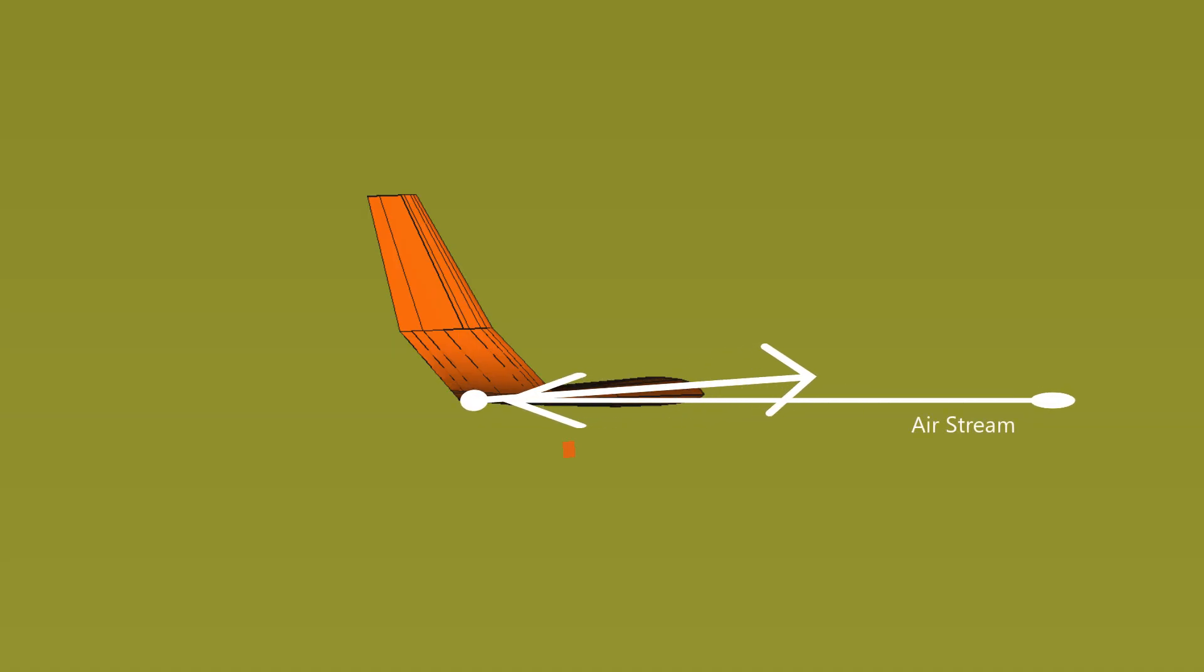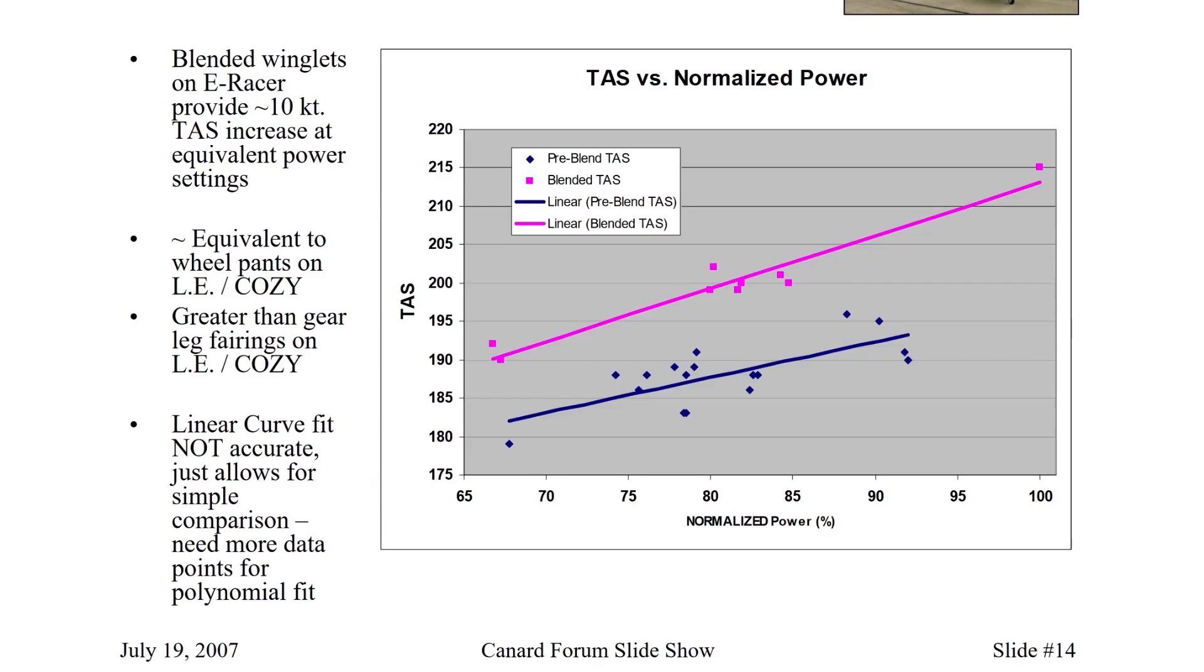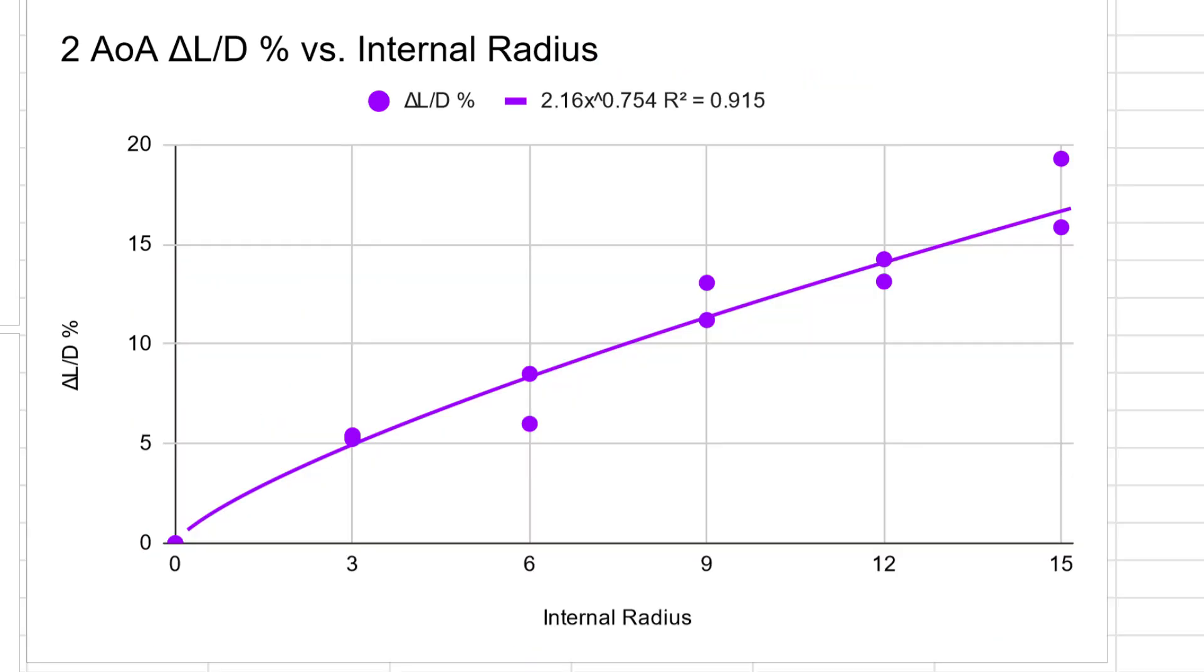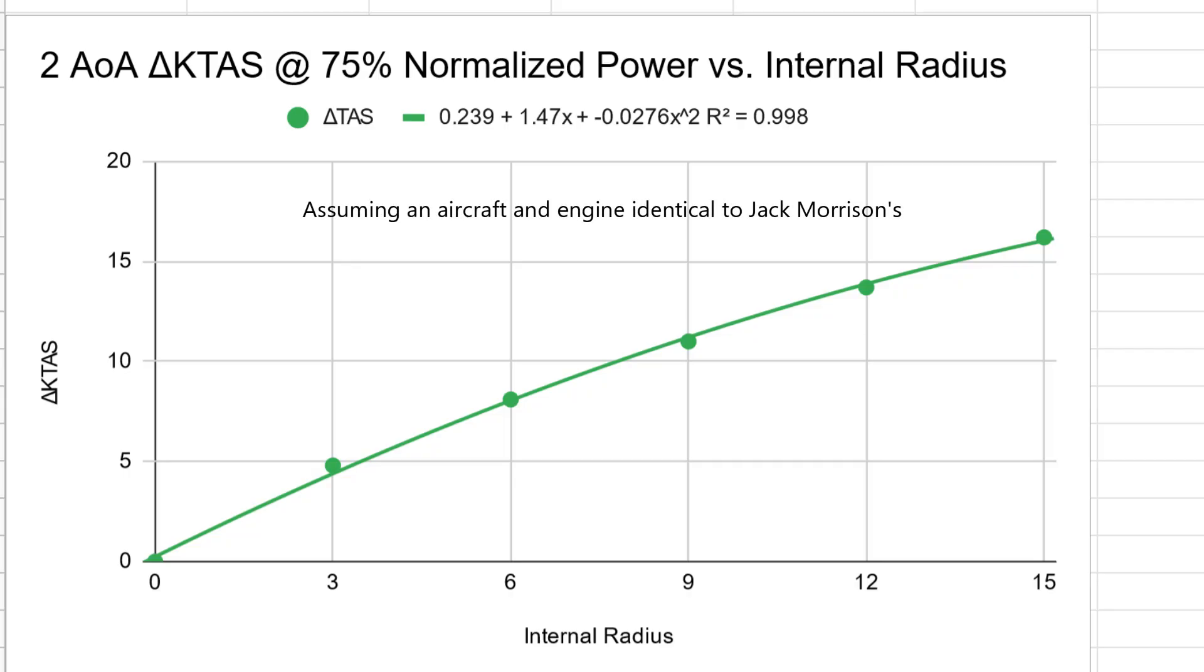Returning to the 2 degree angle of attack, this was approximately where the plane should be flying in cruise flight. So, using the original cruise speed obtained by Jack Morrison at 75% normalized power, and then comparing that to the lift-to-drag ratio improvements given by different curvatures, I was able to calculate a ratio and a rough line that shows the expected improvement in cruise speed with varying degrees of curvature. So, these are the final results. We could expect an improvement of about 5 knots on the cruising speed with a 3-inch curve. Increasing that to 6 inches would net about an 8-knot improvement. 9 inches gives 11 knots, and this was the benchmark obtained using Jack Morrison and Mark Zeitlin's results. 12 inches would give an expected improvement of about 13.5 to 14 knots, and 15 inches would give an improvement of about 16 knots.